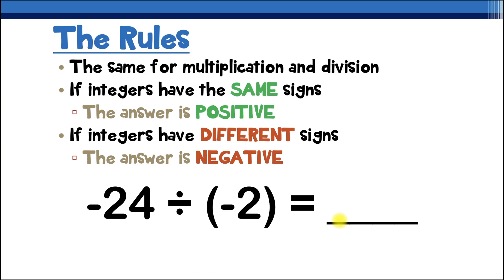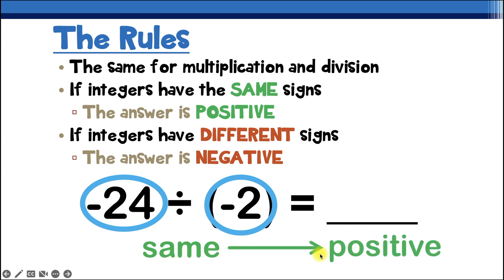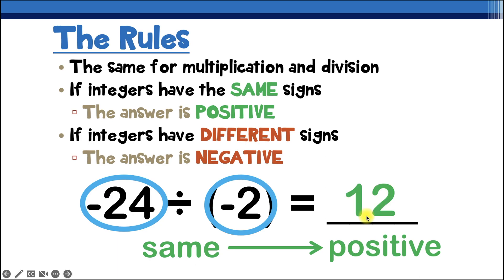Here's our next example: negative 24 divided by negative 2. Our first number is negative and our second number is also negative, which means the signs are the same. Because the signs are the same, our answer will be positive. 24 divided by 2 is 12, so the answer is positive 12.